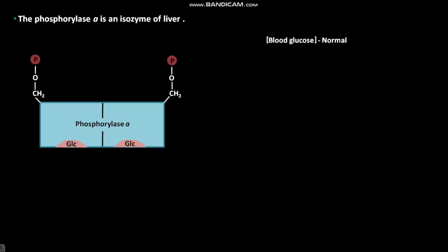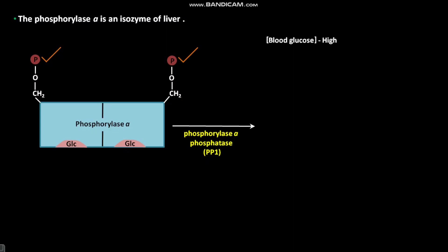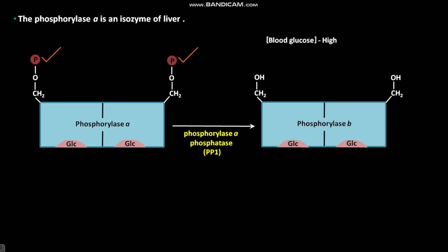This conformational change exposes its phosphorylated serine residues. When blood glucose concentration is high, Phosphorylase A phosphatase, or PP1, acts on these exposed phosphorylated serine residues of Phosphorylase A. As a result, Phosphorylase A is converted into Phosphorylase B with the release of 2Pi.